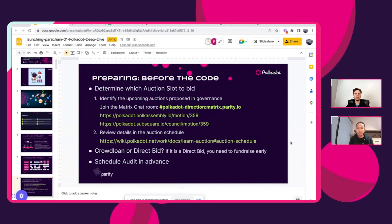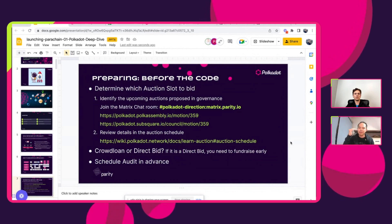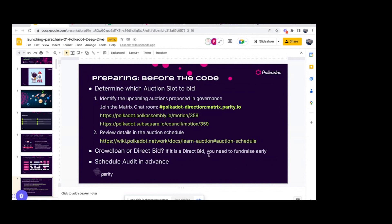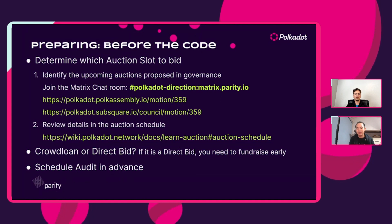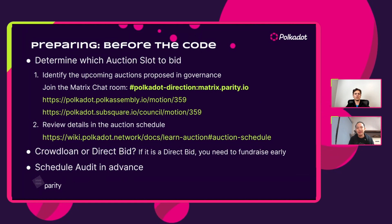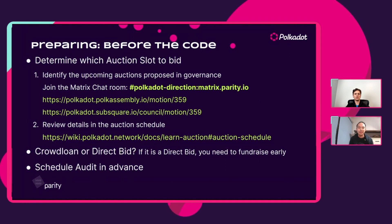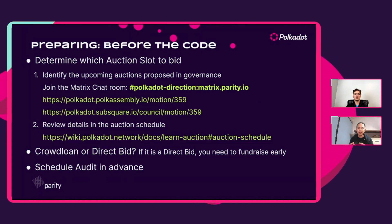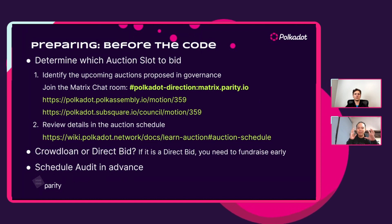There's also a key business question: is it going to be a situation where you directly bid for a slot on the Polkadot auctions, or is it a crowdloan? If it's a direct bid, you need to do fundraising early — usually to investors or socializing a project to VCs or angels — to secure the funds you need to get a slot. Another key step is to start talking to auditors in advance, so you have a good sense of what they expect when you bring your prototype to an audit stage.